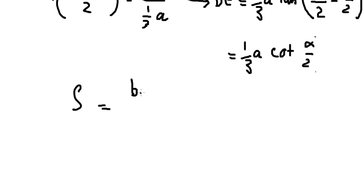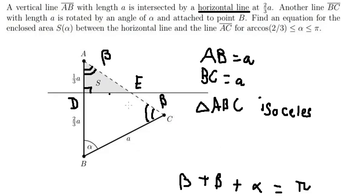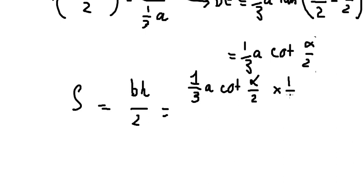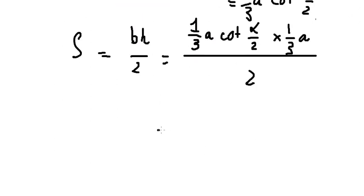The area is base multiplied by height divided by 2. The base is DE and the height is (1/3)a. We divide by 2, so we simplify everything and get (1/18)a² cot(α/2).